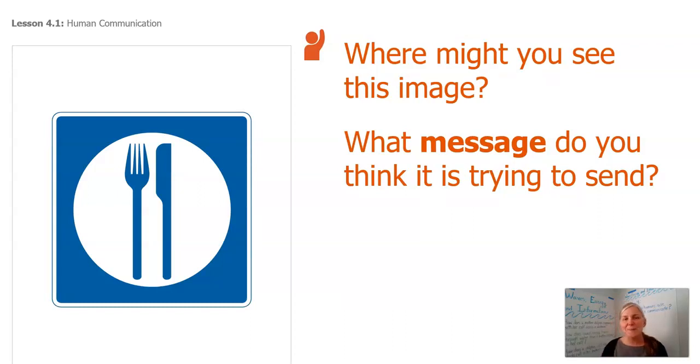Where might you see this one though? This is the one I kind of think, hmm, I wonder how many of you have seen this sign? What message do you think it's trying to send? If you've never seen it, what do you know about it already? There's a fork, there's a knife. I'm pretty sure it's trying to tell me that this is a place where I could eat, or you could eat, or your whole group could eat. We know that just based on a fork and a knife.